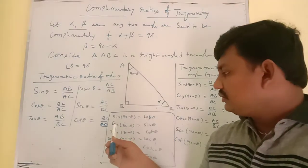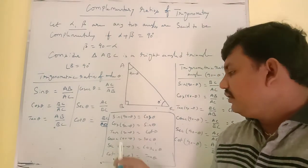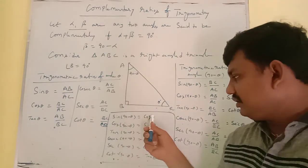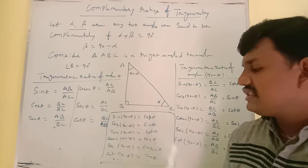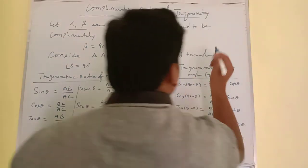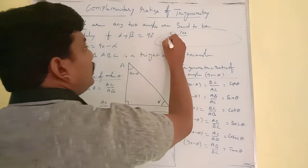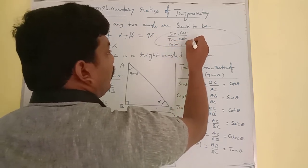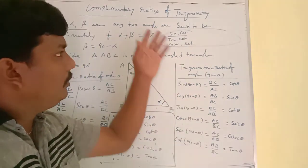The complementary ratio of sine is cos, and cos is sine. The complementary ratio of tan is cot, and cot is tan. The complementary ratio of cosecant is secant, and secant is cosecant. So there are three pairs of complementary ratios in trigonometry: sine and cos, tan and cot, cosecant and secant.